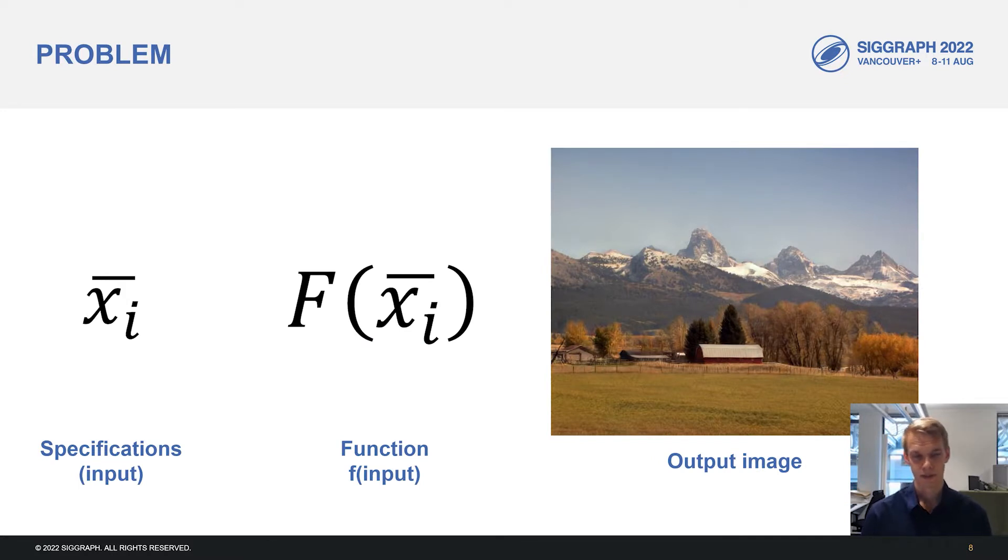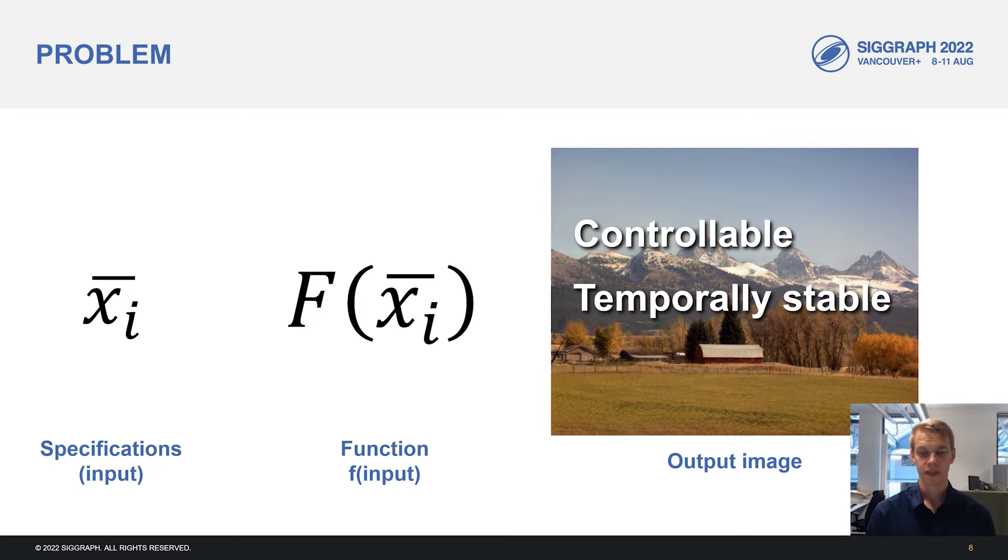Our problem is formulated as follows. We have input specifications that decide what kind of image we want to generate. Next, we have a function f that takes these specifications and produces an output image. And we want the output image to have the following properties. We want it to be controllable. We want to be able to change different properties of the image independently of each other. We want our image to be temporally stable. Since we're interested in creating long time-lapse sequences that don't flicker, we want them to have this property. And finally, we want our outputs to be high quality and to resemble the input sequence as much as possible.